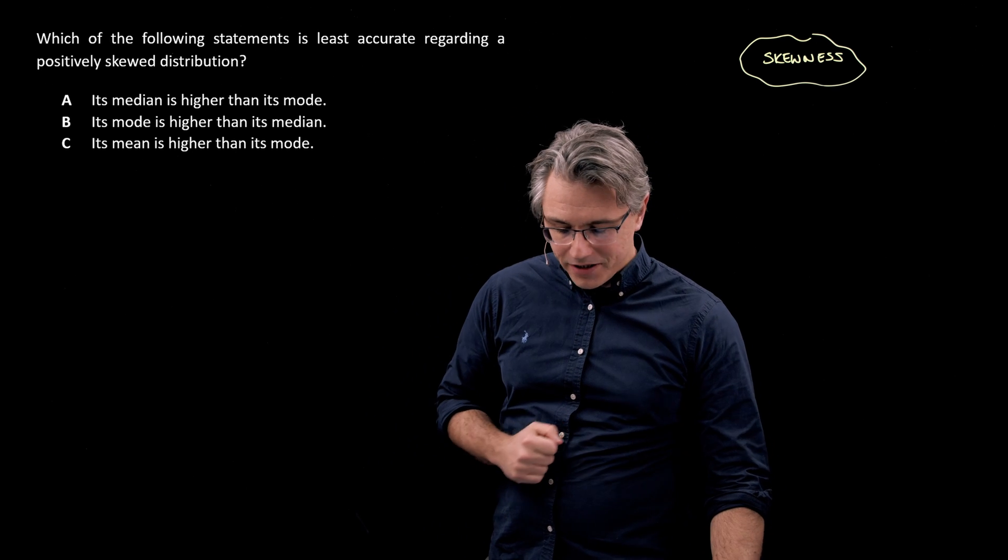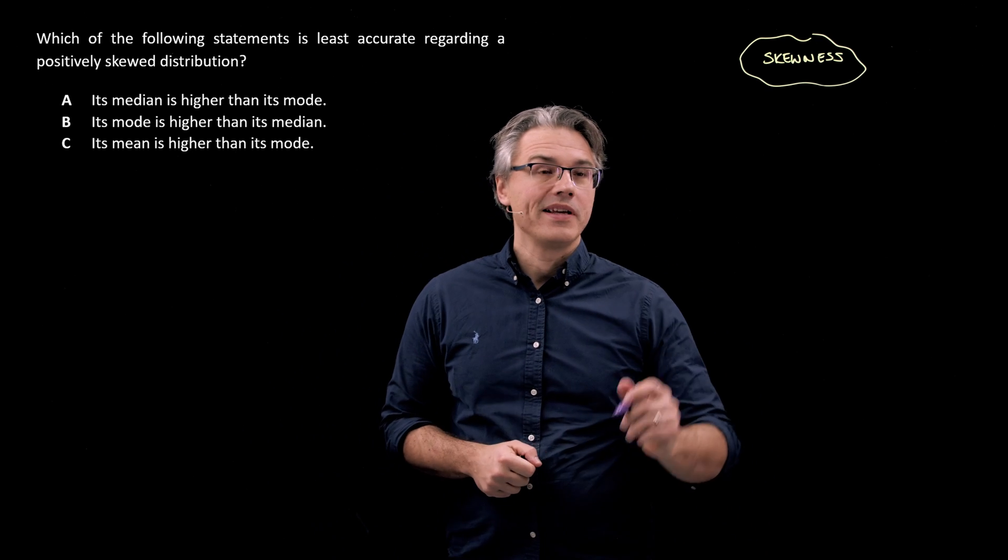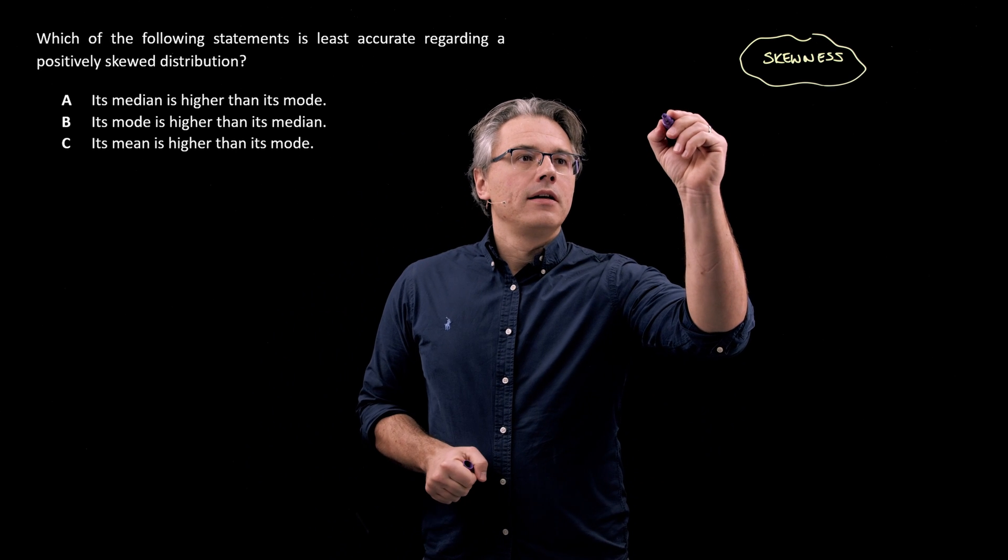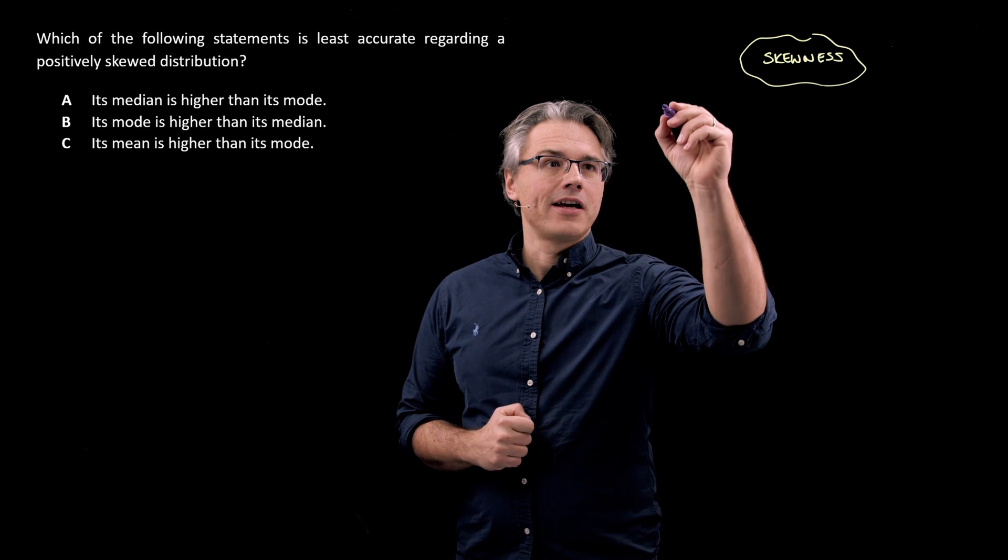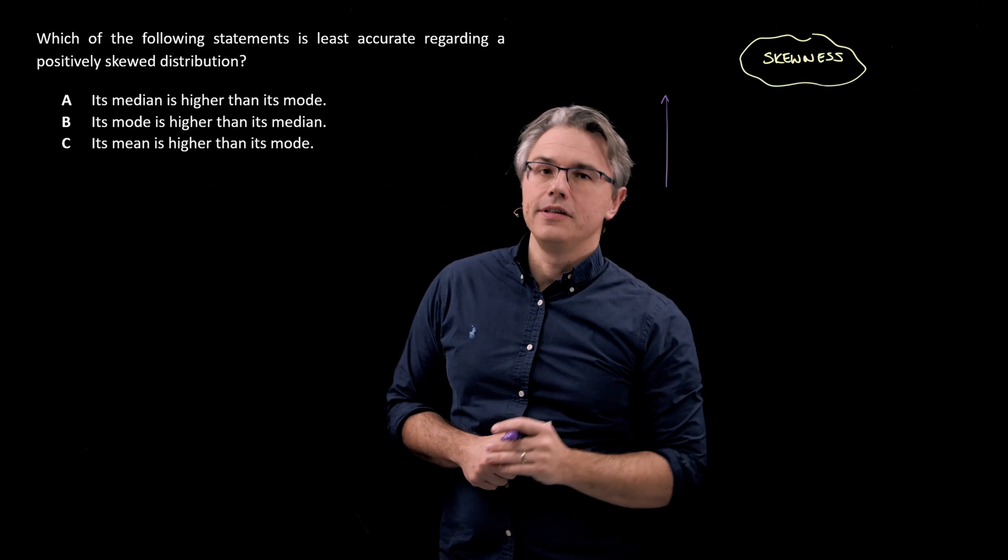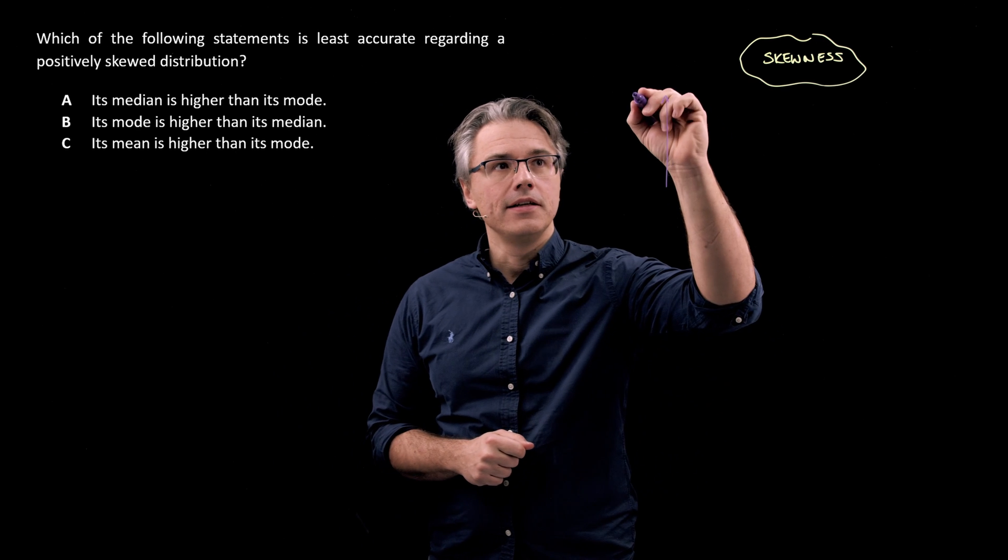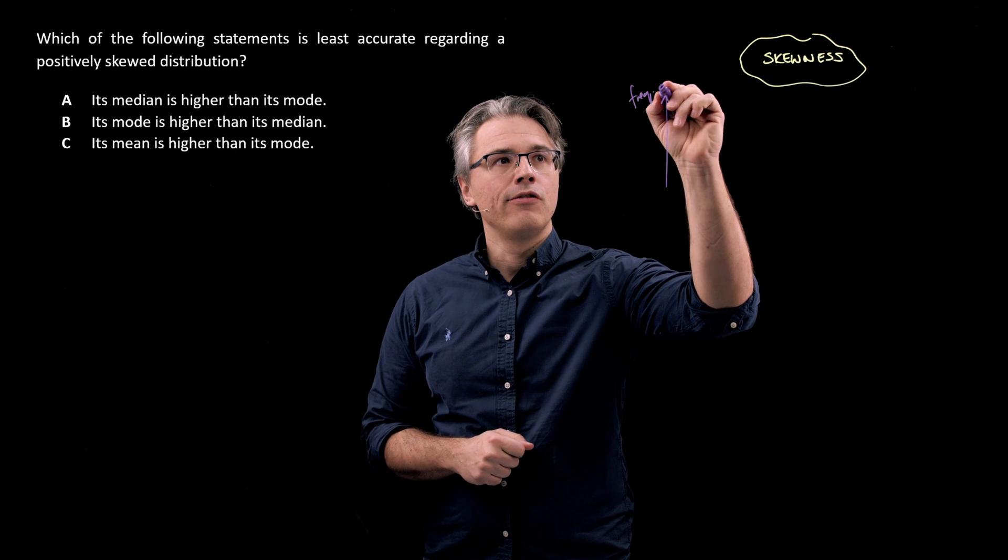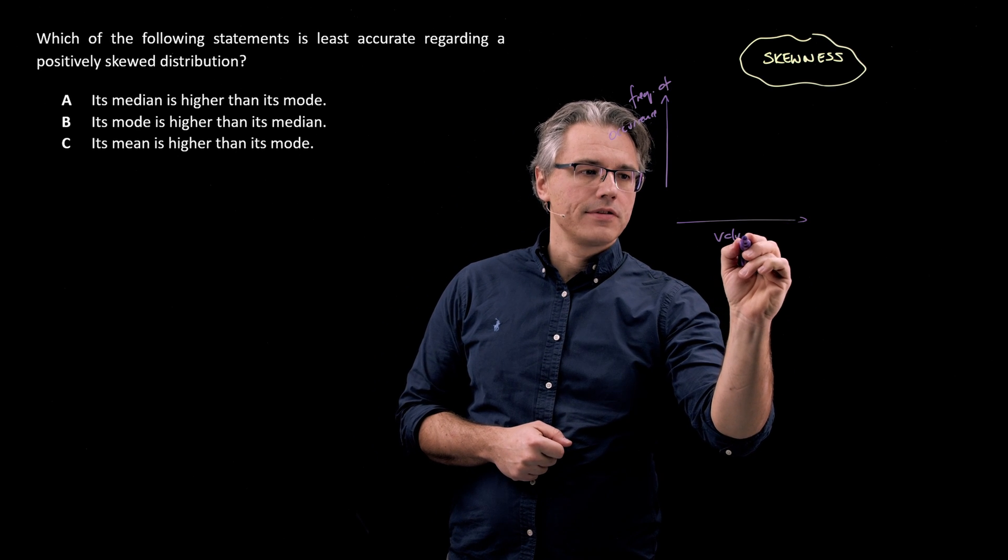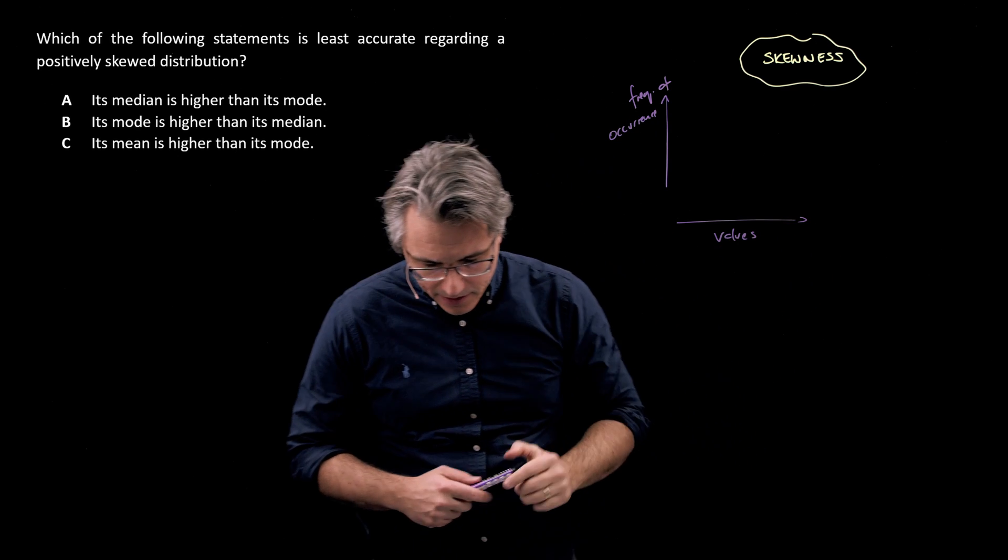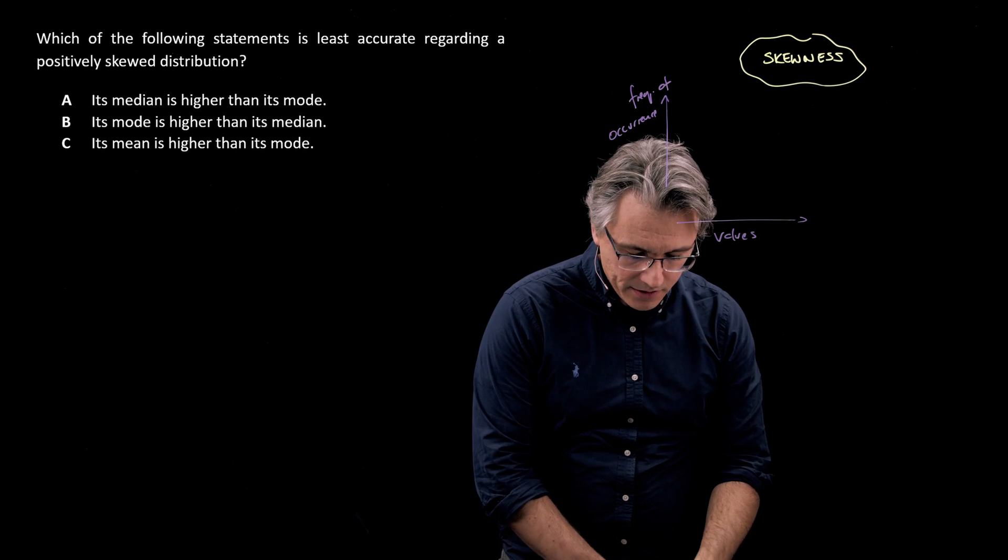Okay, before we answer the question, a little bit of theoretical knowledge. When we think of distributions, it's always customary to plot them on a chart. On that chart we're going to have on the vertical axis the frequency of occurrence and on the horizontal axis the actual values taken on by the individual items in that distribution.